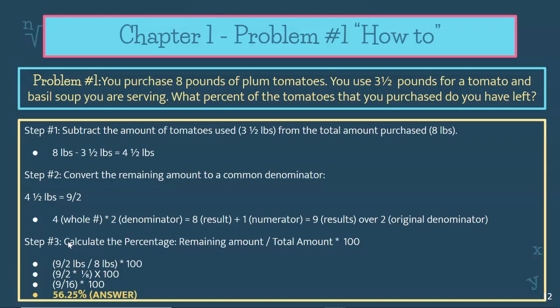So step one, you're going to subtract the amount of tomatoes used — three and a half pounds — from the total amount purchased, which was eight pounds. So eight subtracted by three and a half pounds gives you a remainder of four and a half pounds left of tomatoes.